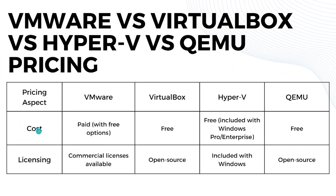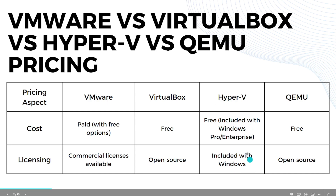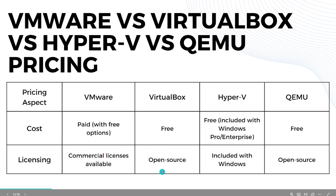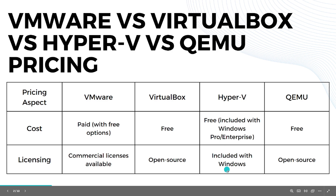Now let's look at pricing. VMware is paid but with free options, VirtualBox is free and open source, Hyper-V is also free — it's included when you purchase Windows — and QEMU is also free. So VMware is the only paid option. In terms of licensing, VMware has a commercial license, VirtualBox is open source, Hyper-V is included with Windows, and QEMU is also open source.